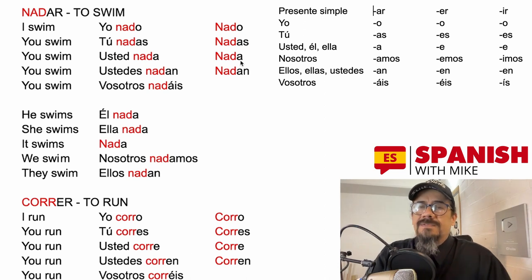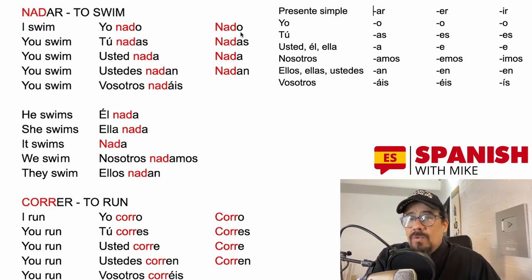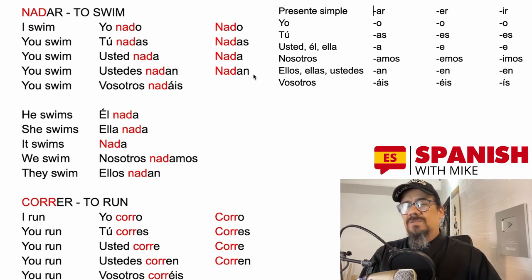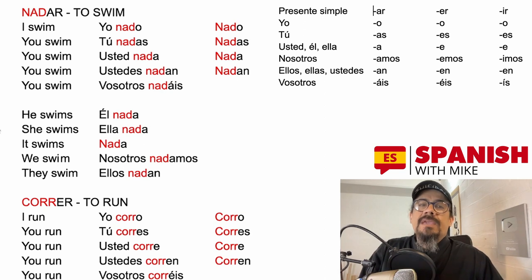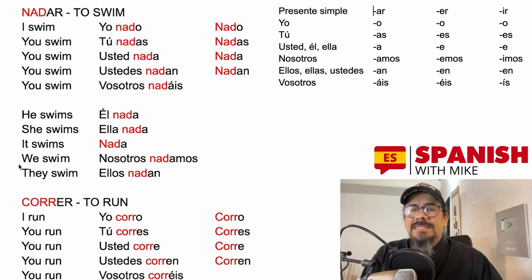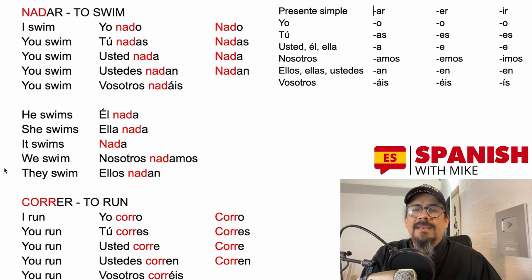In Spanish we can write the verb conjugation without the subject, because the conjugation itself tells us what the subject is — and also by context. He swims = él nada. She swims = ella nada. It swims = nada. We swim = nosotros nadamos. They swim = ellos nadan. We followed the conjugation based on the infinitive form nadar.